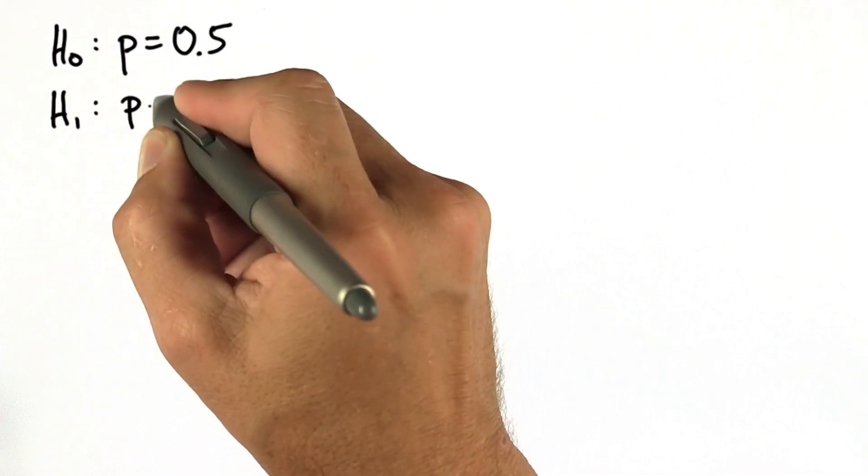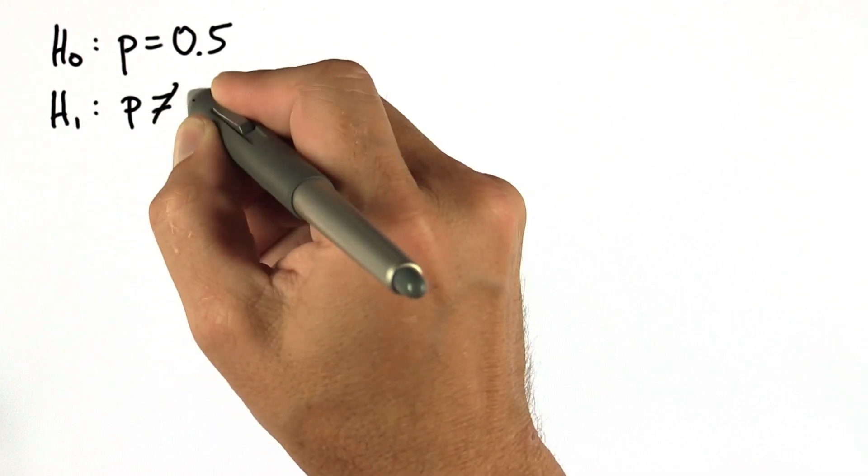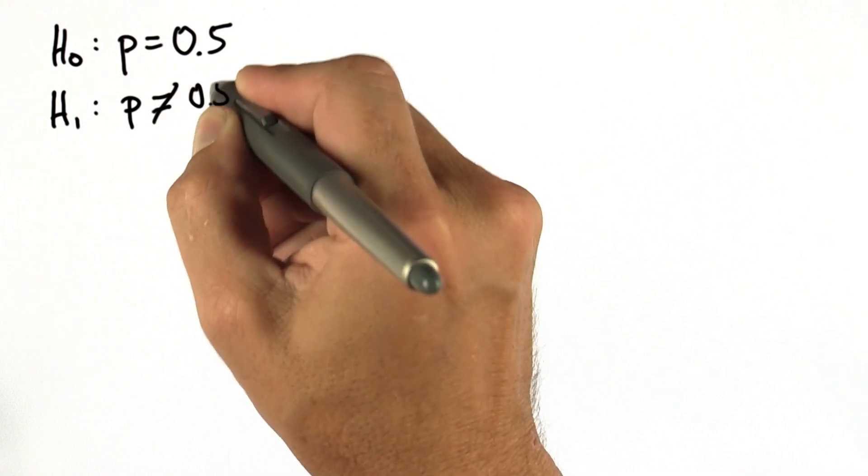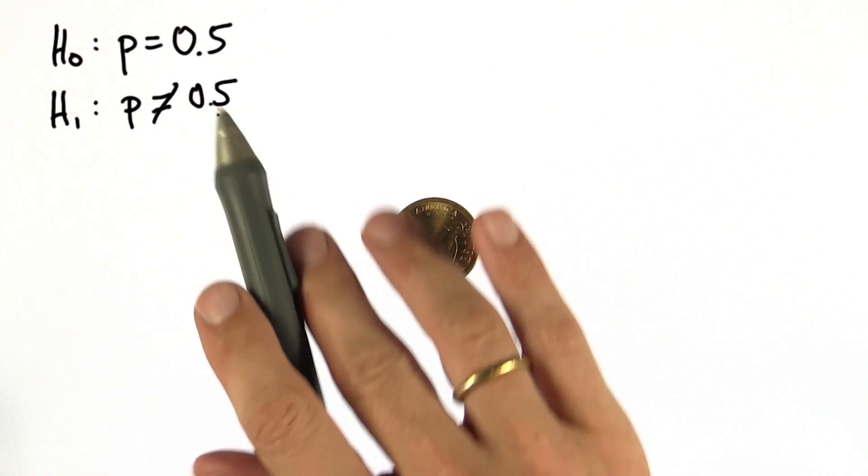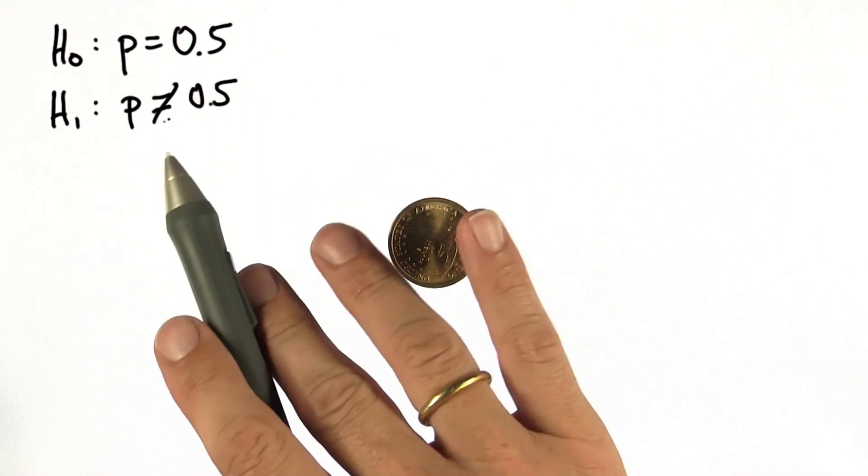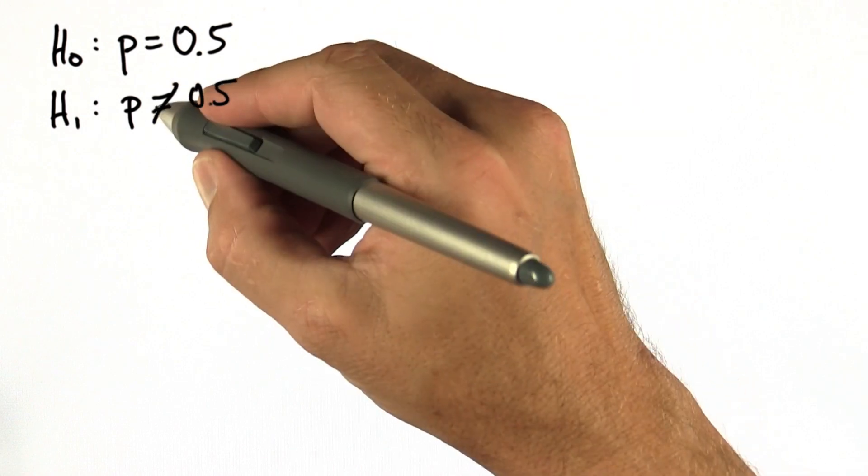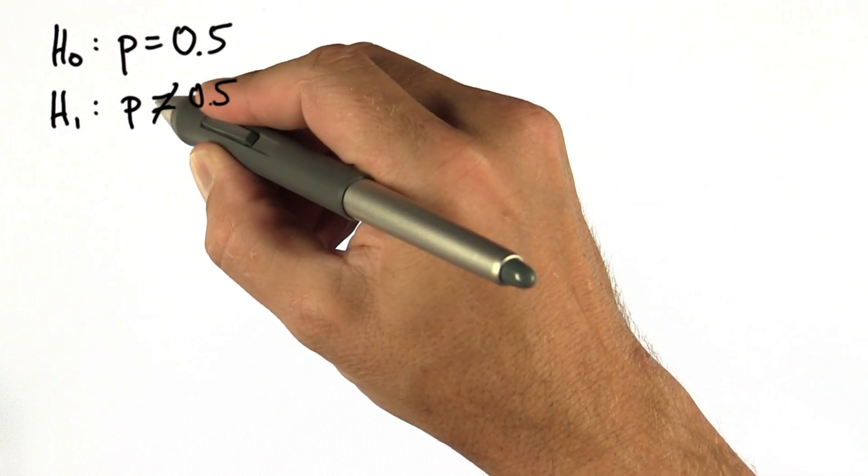And our alternate hypothesis is a two-sided hypothesis. The probability either is smaller than 0.5 or larger than 0.5, which we write as p unequals 0.5.